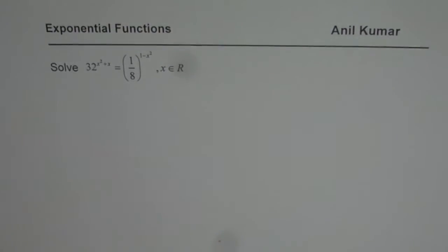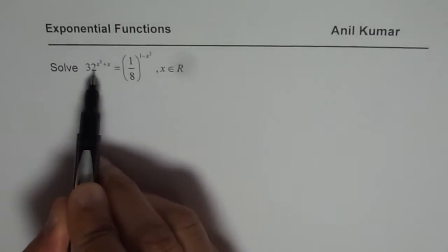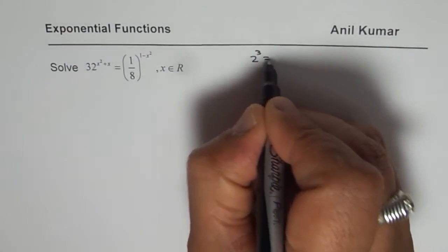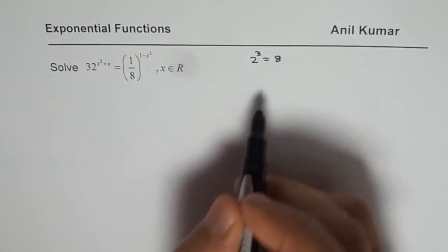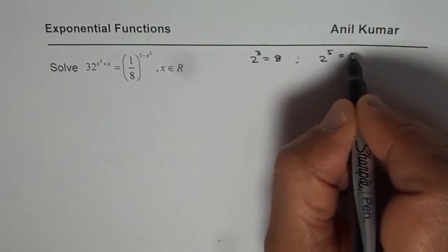Now how to solve such equations? Well the strategy is to get the same base on both the sides. Now we know that 2 to the power of 3 is 8, and 2 to the power of 5 is 32.